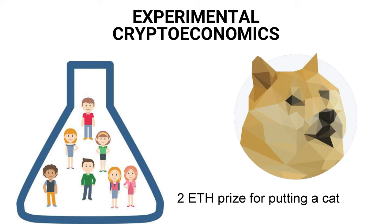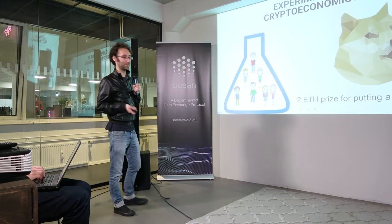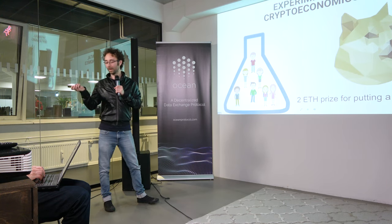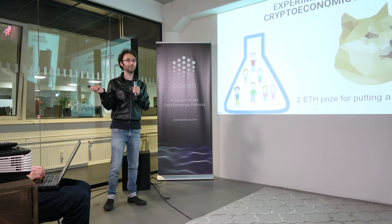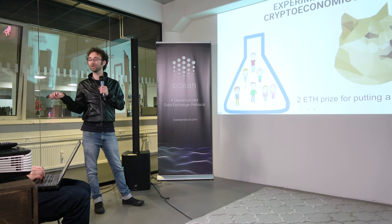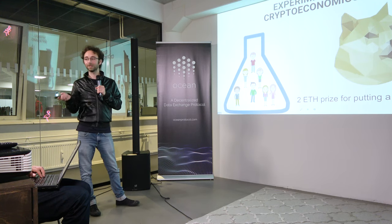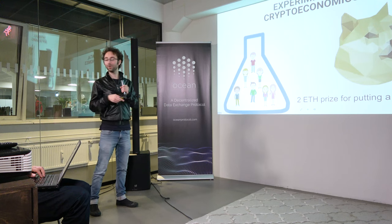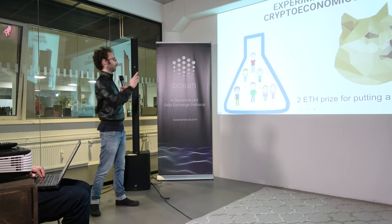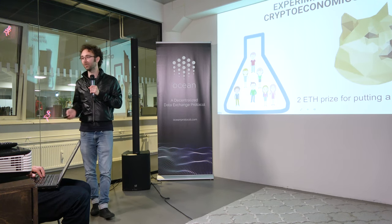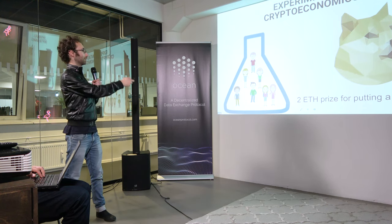Now we're going full on Doge-on-Trial. There is still a reward of two ETH for anyone who manages to put a cat on Doge-on-Trial. We gave participants preloaded wallets with ETH and PNK. You can either challenge cats to get the poster's deposit, or try to put cats to eventually win the two ETH if you succeed.